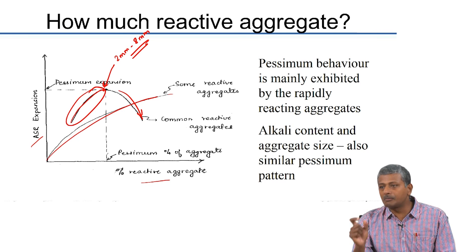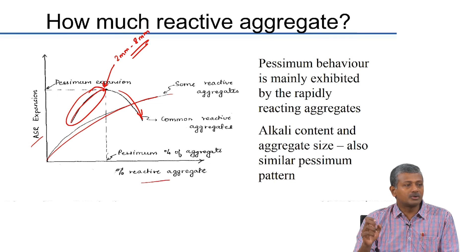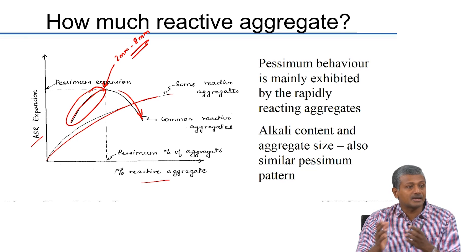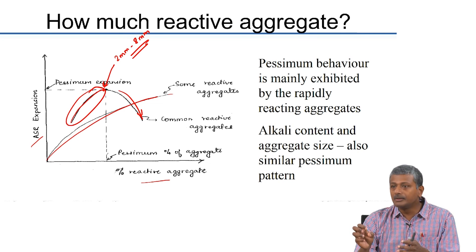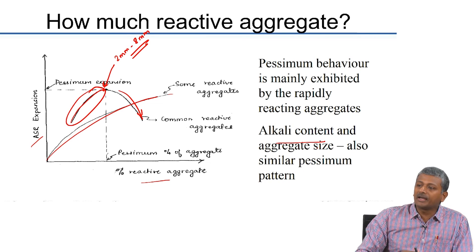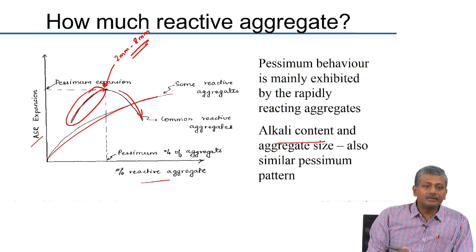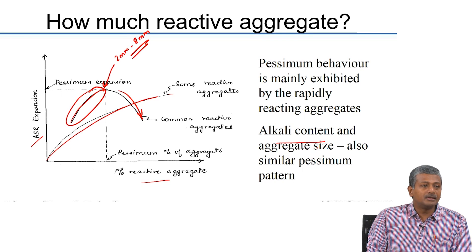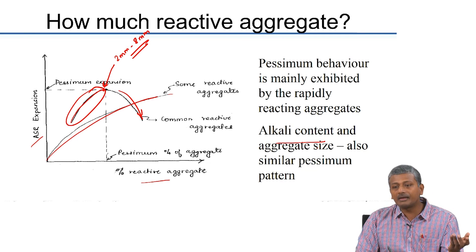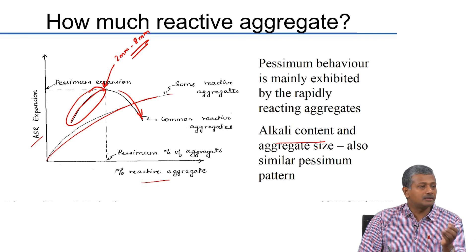If you go much higher than the pessimism size, your level of expansion starts coming down because relative to the surface area available for reactivity, the volume of the aggregate is rather large — the surface area to volume ratio goes down. The alkali content also sometimes shows this relationship: if you have too high an alkali content, the reactivity happens very early in the life cycle. With very small aggregate sizes or pozzolanic materials, the binding of alkali happens very early in the life cycle and does not lead to any major expansions at later ages.